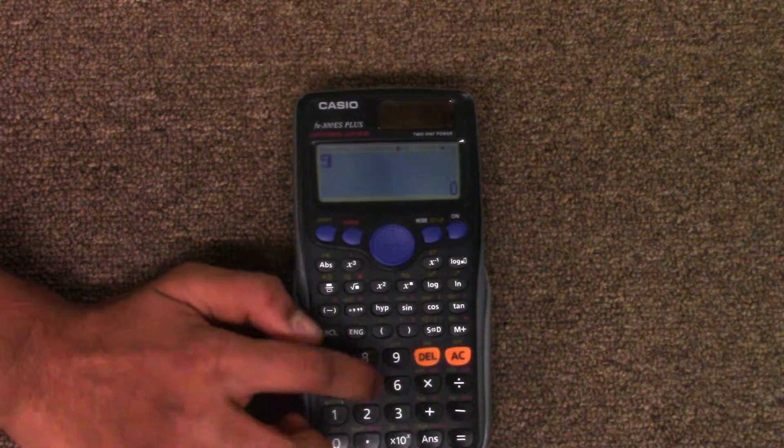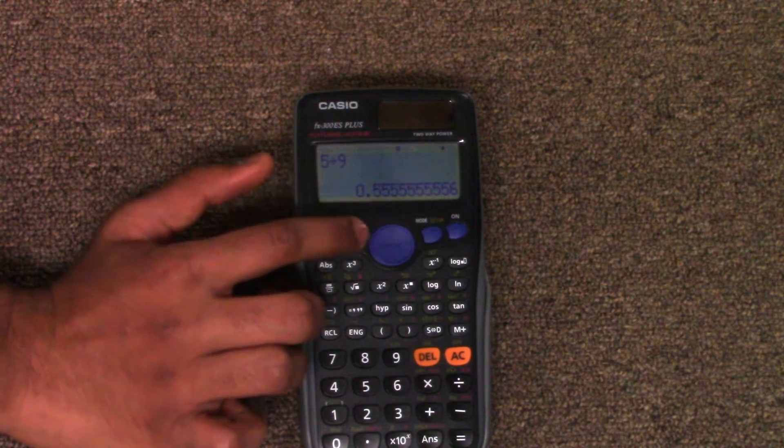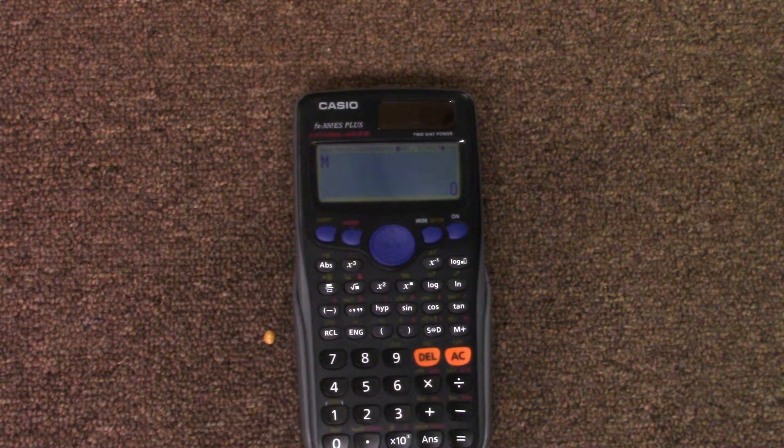As you can see, when we do 5 divided by 9, it comes out in decimal form instead of fractional form. But when we load up the memory, it comes out as 0 instead of 8, so the memory is cleared. Thanks for watching.